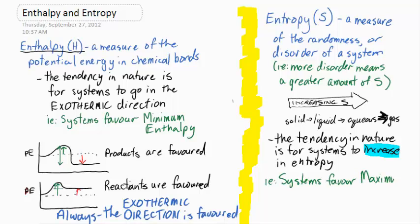Systems favor maximum entropy, which is why your bedroom might be easier to make messy than clean.